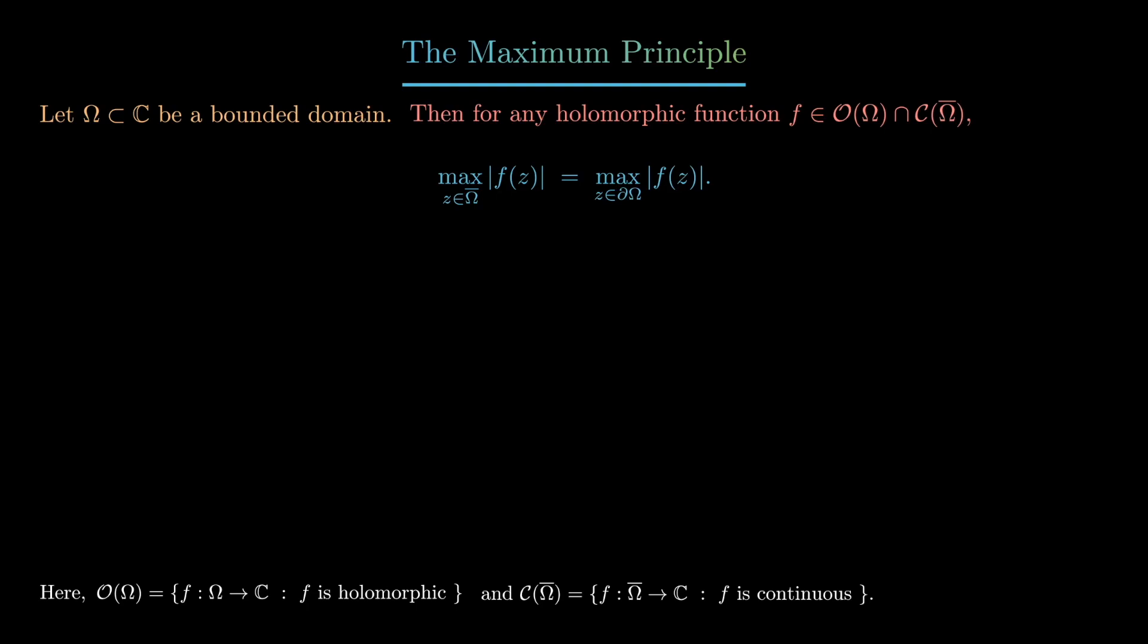So suppose f is a non-constant holomorphic map on Ω which is continuous on the boundary, and suppose that there's a point z₀ in the interior for which the modulus of f(z₀) is greater than or equal to the modulus of f(z) for all z in some small neighborhood of z₀.